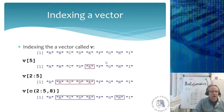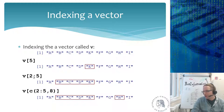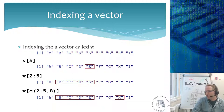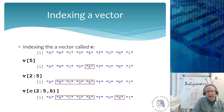To index from a vector, use square brackets. If vector v contains a, b, c, d, e, f, g — v[5] gives you 'e', the fifth element. v[2:5] gives you elements two through five, creating a subset. If you want non-contiguous elements, use the c function inside the brackets — for example v[c(2:5, 8)] — which selects elements two through five plus element eight, returning b, c, d, e, and h.